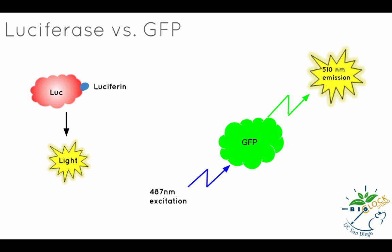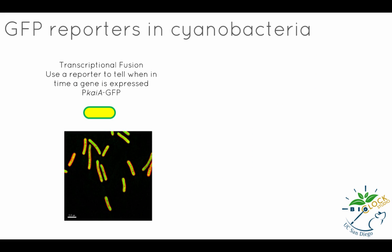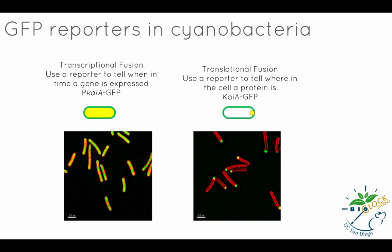Like luciferases, fluorescent proteins can be fused to a promoter or protein of interest by molecular techniques. Fluorescent proteins are brighter than luciferases and advantageous to visualize where the proteins are localized within the cell. Here you can see an example of how GFP is utilized to show when a gene is expressed by using a transcriptional fusion to monitor expression from the ChiA promoter in cyanobacteria. GFP is expressed when the ChiA promoter is activated, but the GFP protein has no instructions on where to go within the cell. By using a translational fusion where GFP is fused to ChiA, we can see where within the cell the ChiA protein localizes. Although GFP is good for visualization, it is not as efficient for quantification, especially when the amount of gene expression is low, as many components of the cell also naturally fluoresce and add noise to the signal.